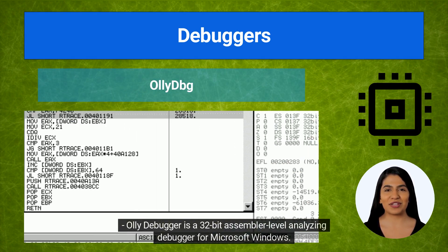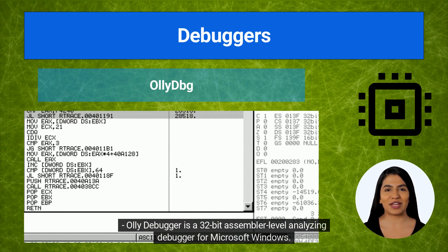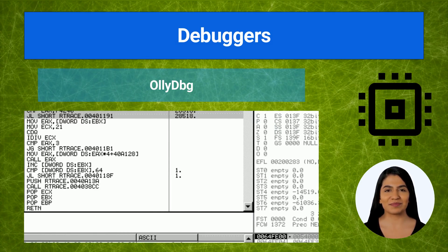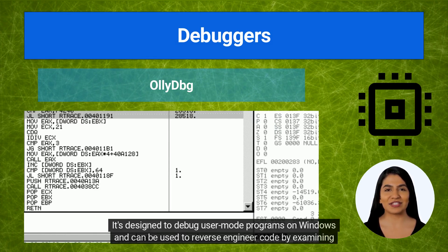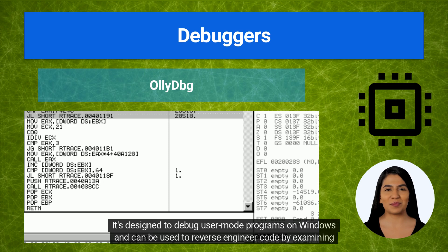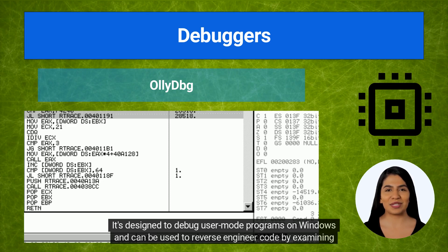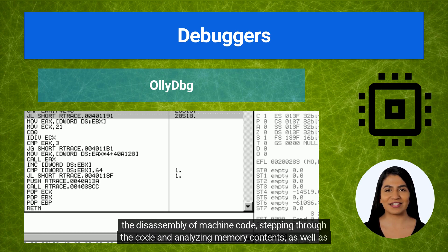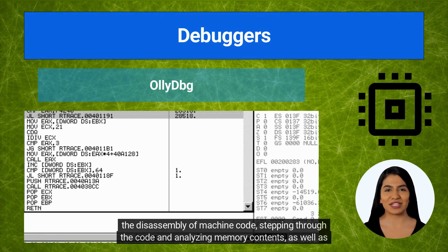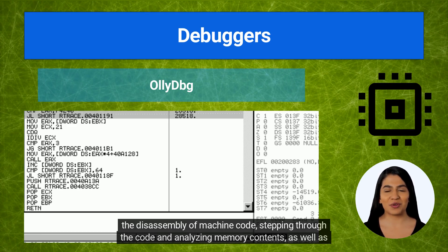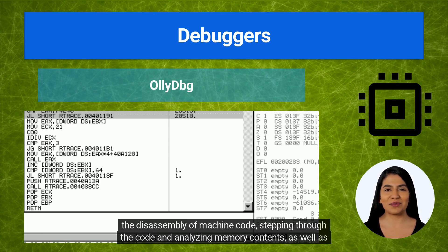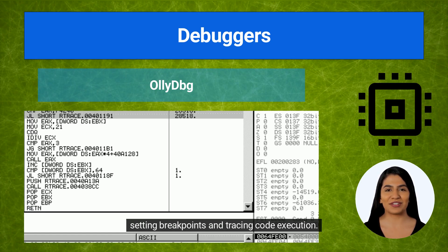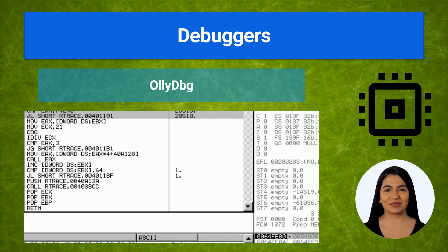OllyDbg is a 32-bit assembler level analyzing debugger for Microsoft Windows. It's designed to debug user mode programs on Windows and can be used to reverse engineer code by examining the disassembly of machine code, stepping through the code and analyzing memory contents, as well as setting breakpoints and tracing code execution.